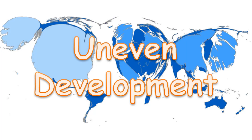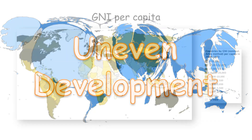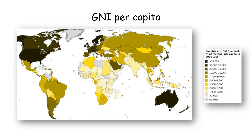Quality of life varies hugely across the world because of uneven development. If we look at the average earnings of people across the world, you can see from this map that in North America, Western Europe, Australia, New Zealand, and Japan, people are earning a lot more than in countries such as those in Central Africa.